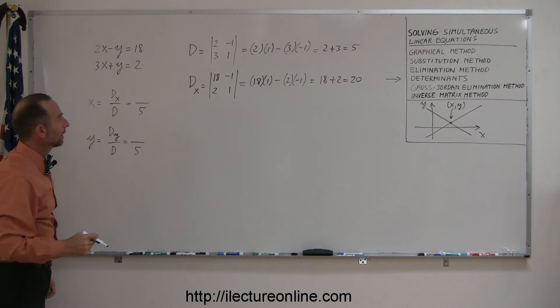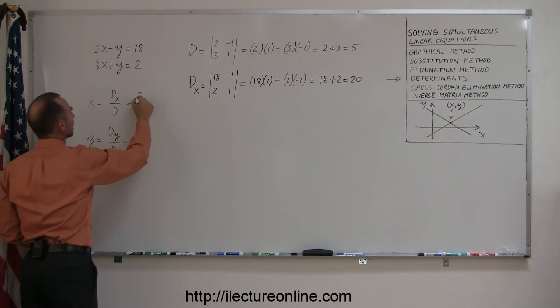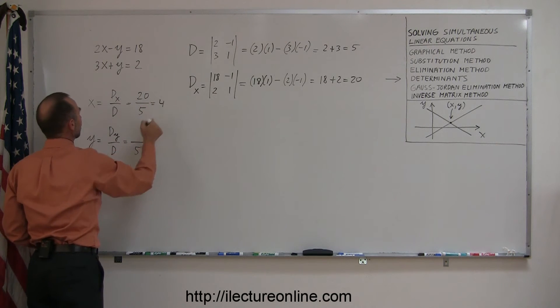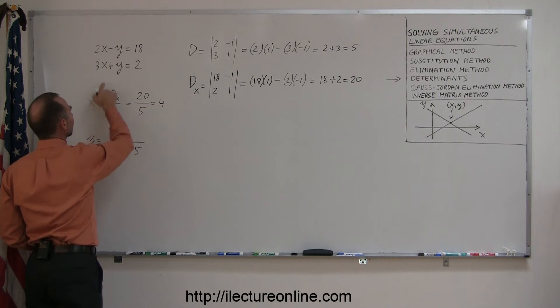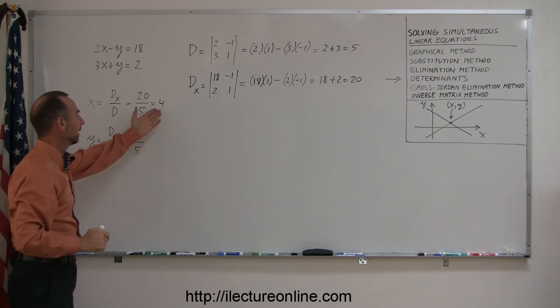That means that the determinant for the x value is 20, which we can place in here. And so with 20 divided by 5 is equal to 4, which means the x coordinate of the solution of these two equations is 4.